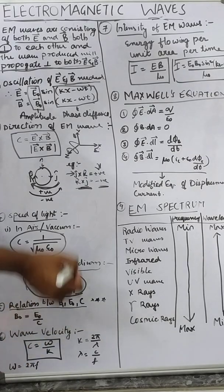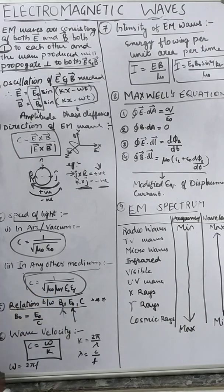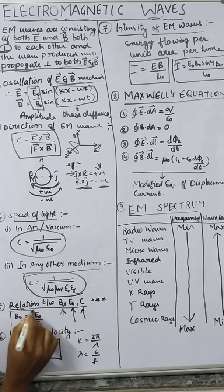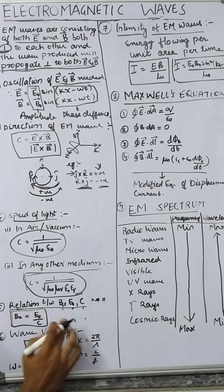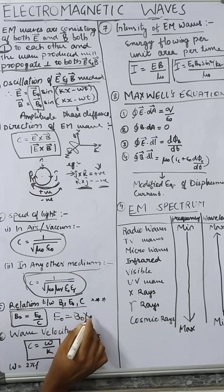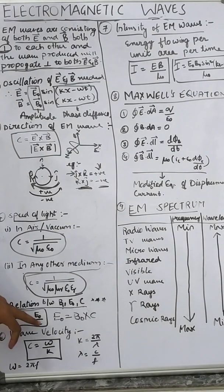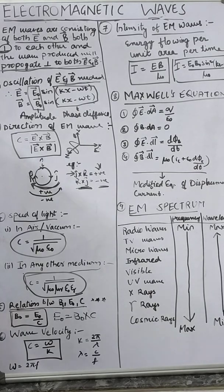Now the relation between electric field, magnetic field, and speed of light: b0 = e0 / c, and e0 = b0 · c. That means electric field divided by magnetic field will give you the speed of light.